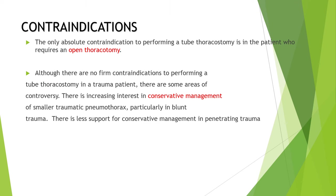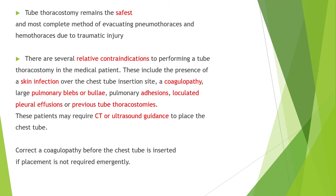Contraindications: The only absolute contraindication to performing a tube thoracostomy is in the patient who requires an open thoracotomy. Although there are no firm contraindications in trauma patients, there are some areas of controversy. There is increasing interest in conservative management of smaller traumatic pneumothorax, particularly in blunt trauma, with less support for conservative management in penetrating trauma. Tube thoracostomy remains the safest and most complete method of evacuating pneumothoraces and haemothoraces due to traumatic injury.